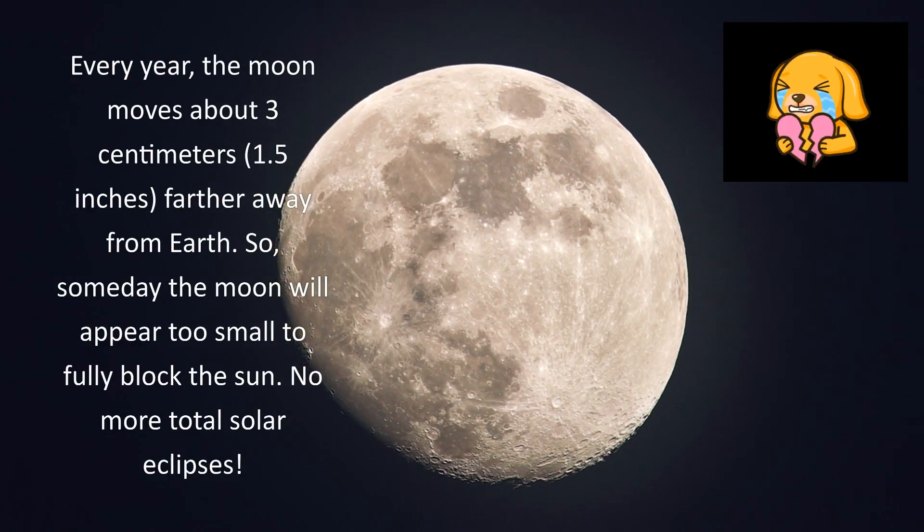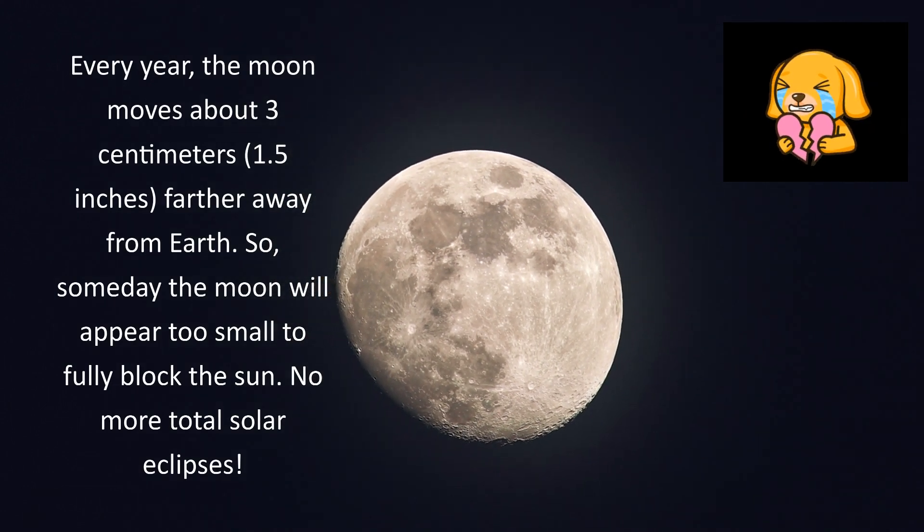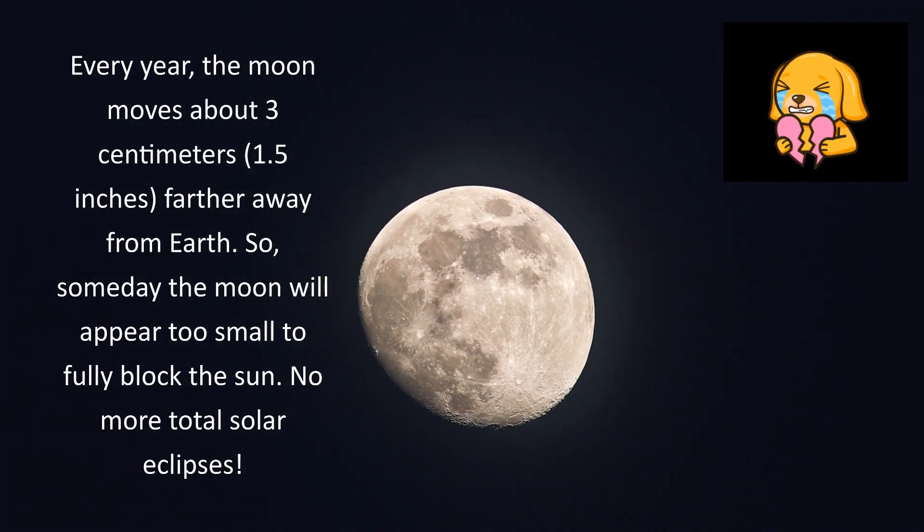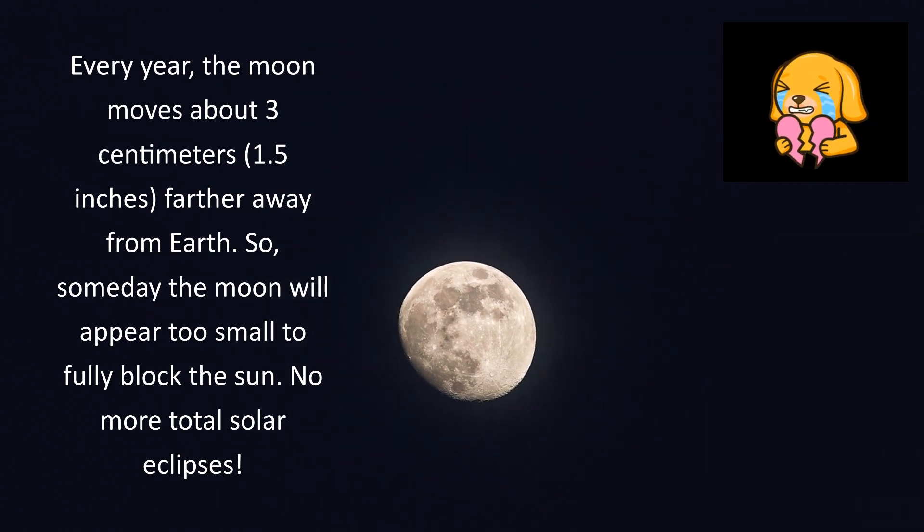Every year, the moon moves about 3 centimeters farther away from Earth. So someday, the moon will appear too small to fully block the sun. No more total solar eclipses.